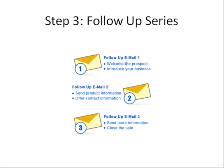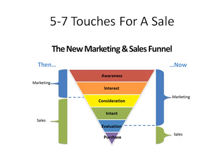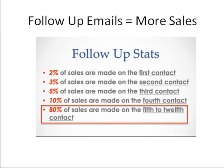Studies show that most people do need seven points of contact before they will buy anything at all, which moves us on to Step 3. You'll need to have a series of emails to follow up with anyone who signs up for your discount or your valuable report. Most people do need seven points of contact before they'll buy anything, so that's exactly what we're doing here.